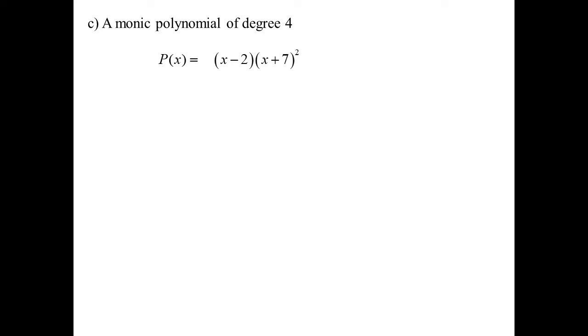What about if it was monic of degree 4, though? Well, again, I know I've got these two factors, but there might be another linear factor. Well, in fact, there has to be another linear factor. So I'll multiply by x minus a, but a can't be 2 and it can't be negative 7. Otherwise, that would change the double root and the single root, like that.